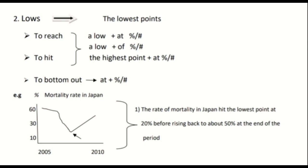Now let's talk about lows. Lows are the lowest points in a line graph. The same two verbs used for peaks are used here as well: 'to reach/hit a low of [percentage/number]', 'to reach/hit the lowest point at [percentage/number]', and lastly the phrasal verb 'to bottom out at [percentage/number]' — which is totally fine to use in your essay. Let's take a look at the example: the y-axis shows 10 to 60, and the x-axis shows a five-year period from 2005 to 2010. The graph emphasizes the lowest point, indicated by an arrow from the bottom.